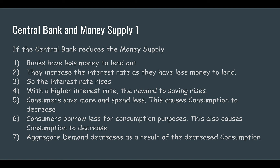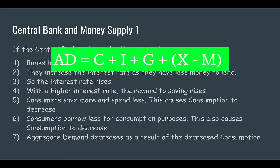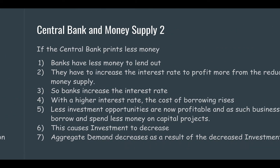Therefore, ceteris paribus — which we'll relax in the next slide — if only consumption fell, aggregate demand would fall. And that's precisely what happens. So that's how a reduction in money supply causes an increase in the interest rates, and that increase in the interest rates causes consumption to fall, which in turn causes aggregate demand to fall.